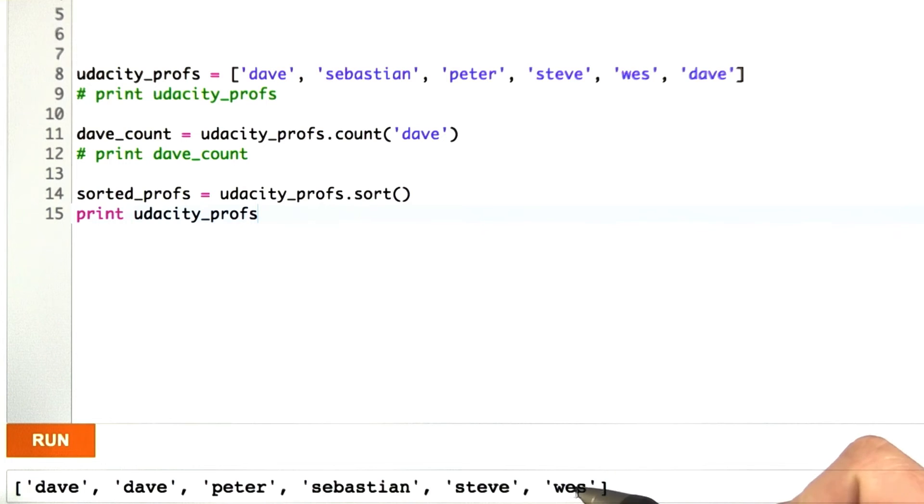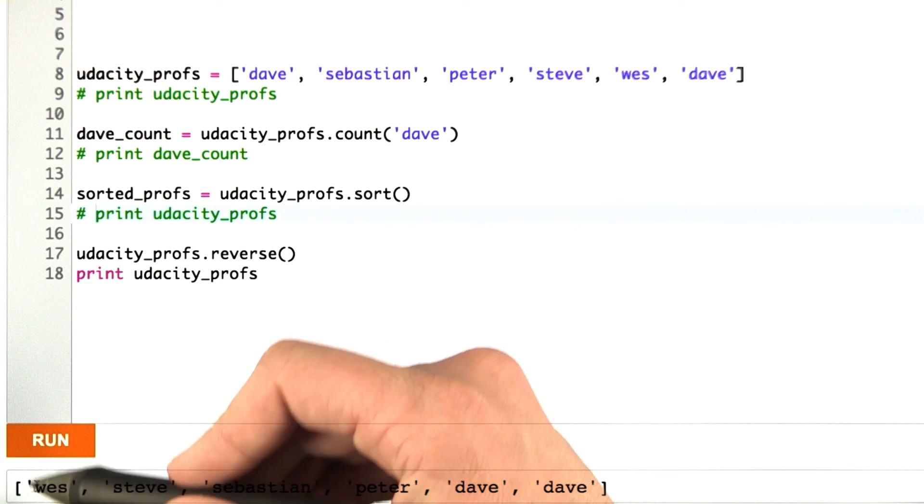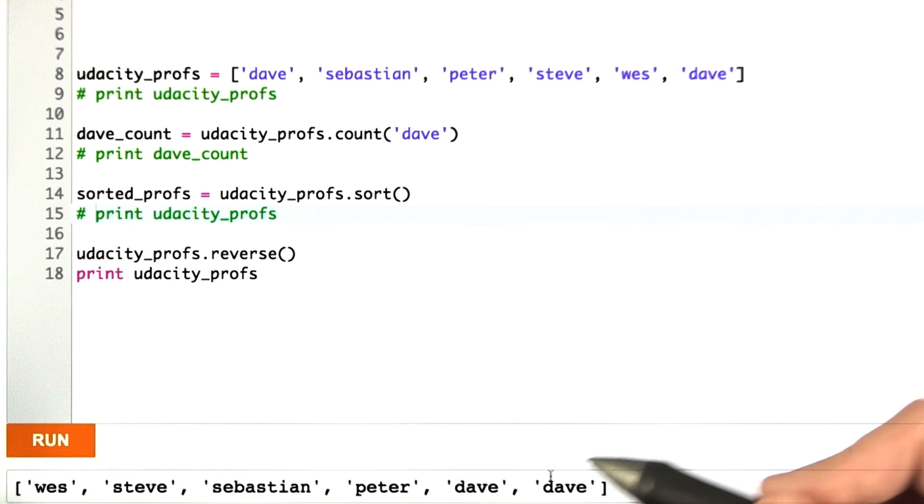Now, poor Wes is always at the end of these sorted lists. Let's give Wes some love by reversing this list. And just as we'd expect, this is the same list, but sorted in reverse alphabetical order. There's plenty of other Python list methods, and feel free to check out the link below this video to see them.